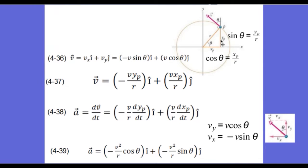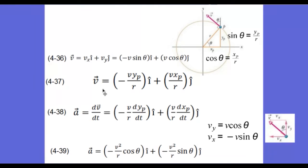Now let's apply our second diagram to our equation for velocity in unit vector notation. We replace sine theta and cosine theta with their equivalents from the triangle: sine theta equals the opposite over the hypotenuse, which is y over r; cosine theta equals the adjacent over the hypotenuse, which is x over r. We substitute sine theta with y/r and cosine theta with x/r to get an equivalent unit vector notation equation for velocity.